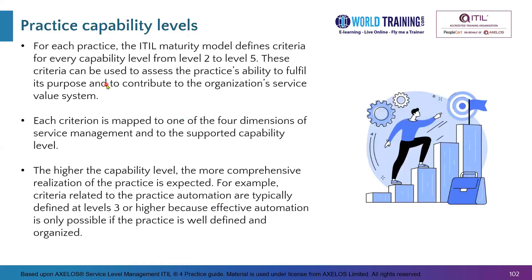The higher the capability level, the more comprehensive realization of the practice is expected. One important point: automation typically occurs at level three or even higher, because automation is only possible if the practice is well defined and organized. However, for the service level management practice, there is automation at level two itself, but in general it is level three where automation comes into picture for most of the other practices.